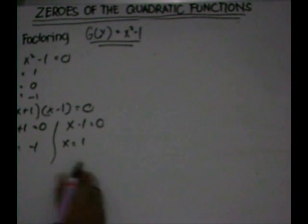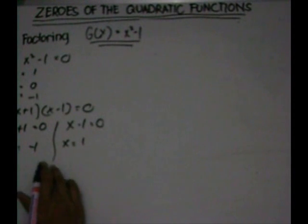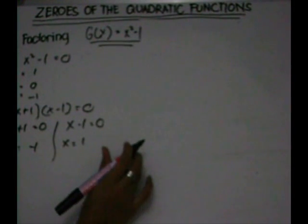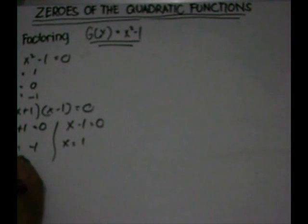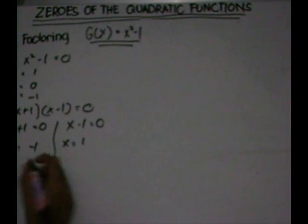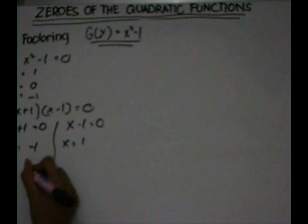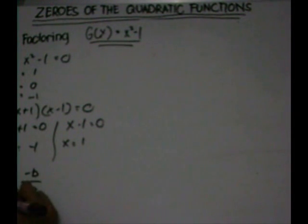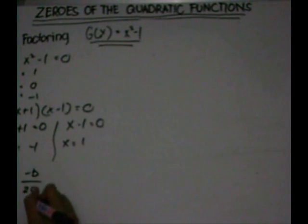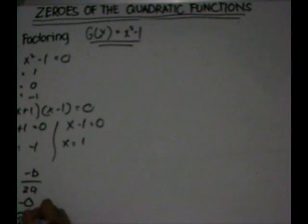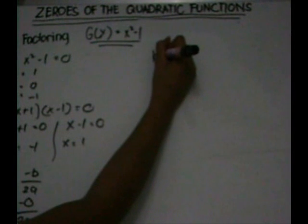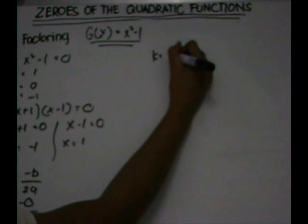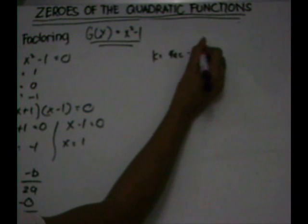Next, we'll find the vertex. We must find h and k. Find h: h is equal to negative b over 2a. Substitute — 2a is equal to zero. Find k: we must use 4ac minus b squared over 4a. Substitute.